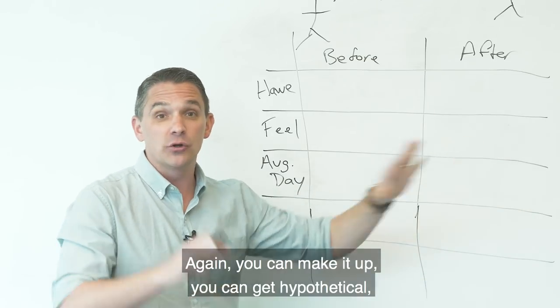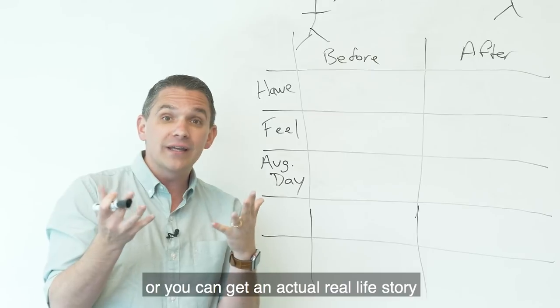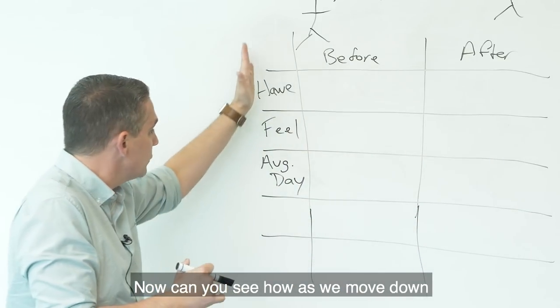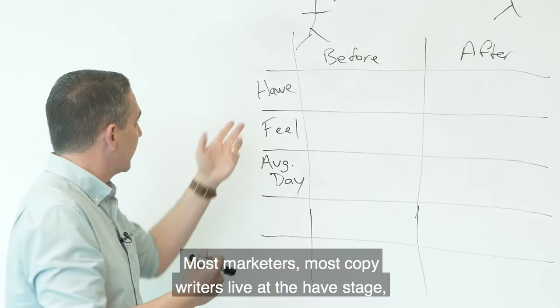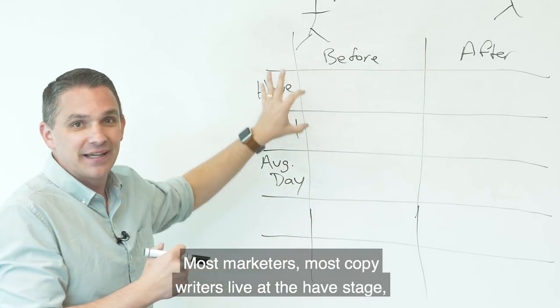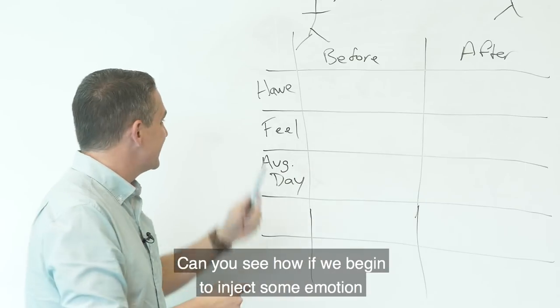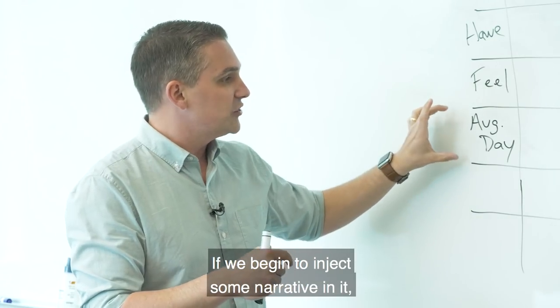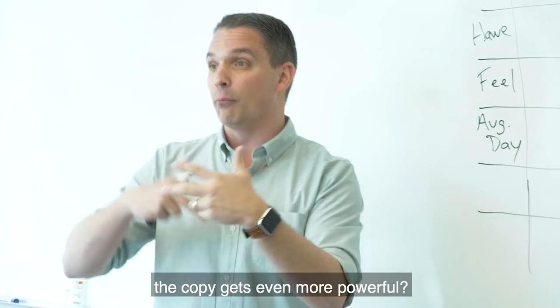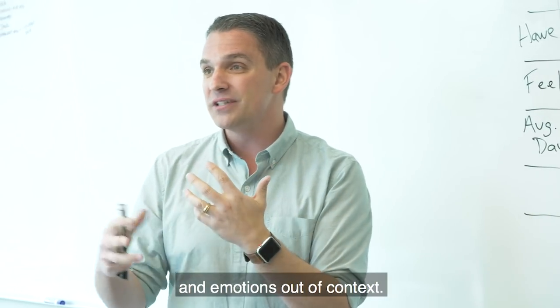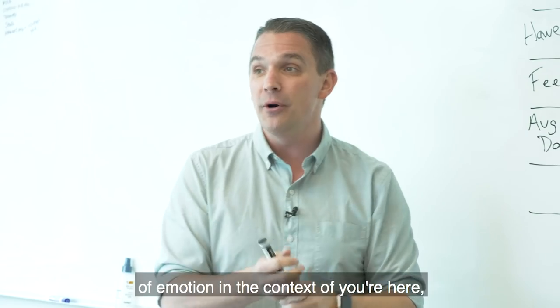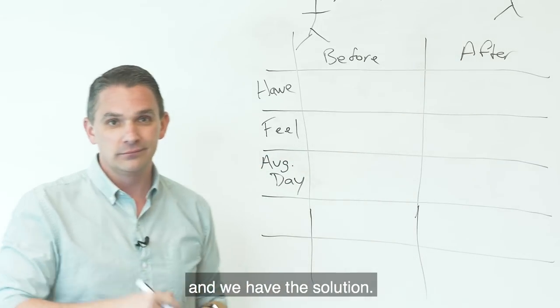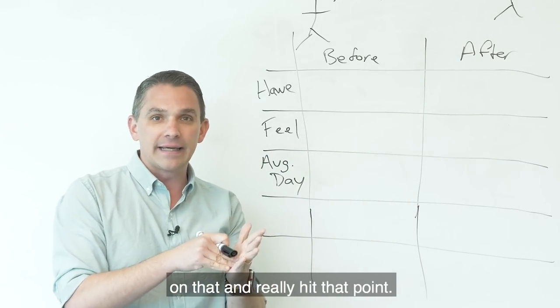So what is that for you? Again, you can make it up. You can get hypothetical or you can get an actual real life story and just tell their stories. That's what I mean by average day. Now, can you see how as we move down, it's getting more and more powerful? Most marketers, most copywriters live at the have stage. They're talking features and benefits. That's have. Can you see how if we begin to inject some emotion into it, our copy gets a lot more powerful. If we begin to inject some narrative in it, the copy gets even more powerful. But we're not just telling stories and emotions out of context. We're telling stories and speaking in terms of emotion in the context of you're here. You want to be here. We understand it and we have the solution. So I just wanted to pause on that and really hit that point.